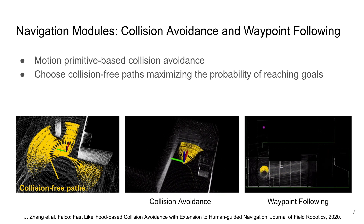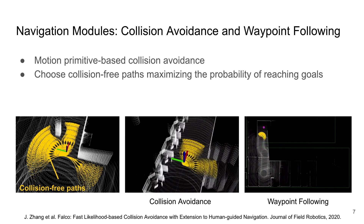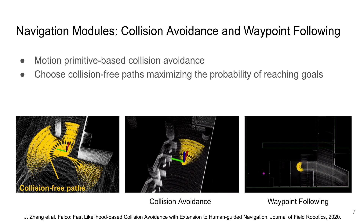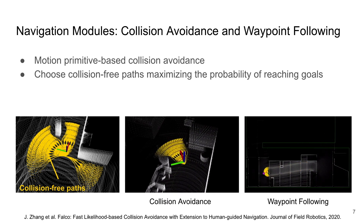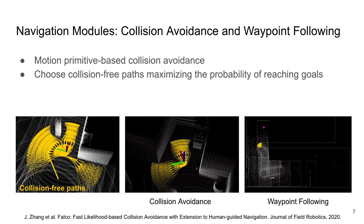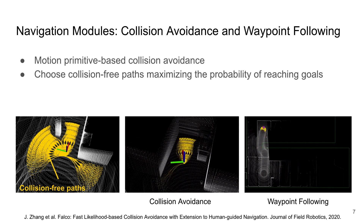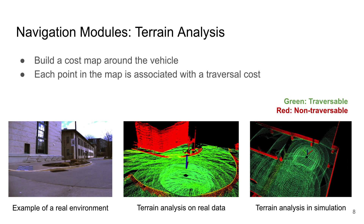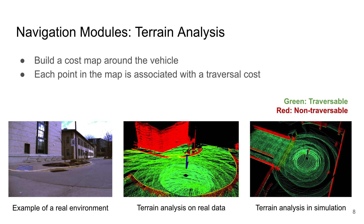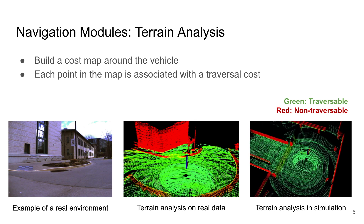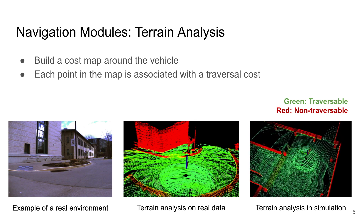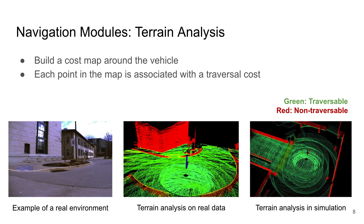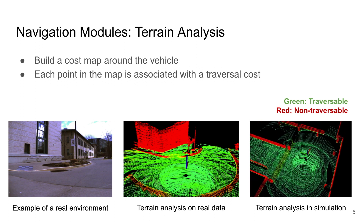The local planner uses a motion primitive library to perform fast collision checks. Among all collision-free paths, it chooses the one that maximizes the probability of reaching the navigation goals. Another navigation module performs terrain traversability analysis. It builds a cost map in the local area around the vehicle, where each point in the map is associated with a traversal cost.